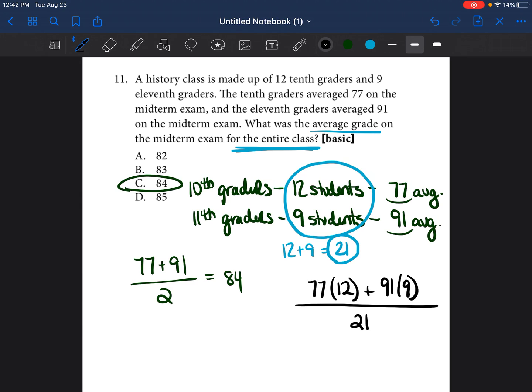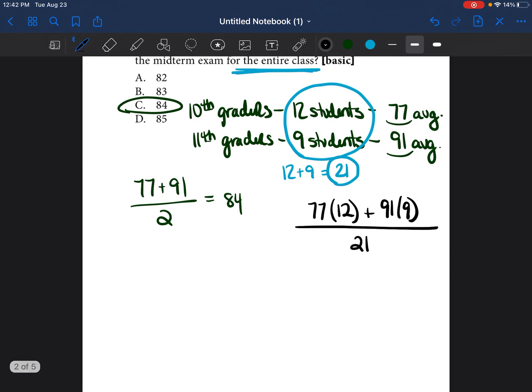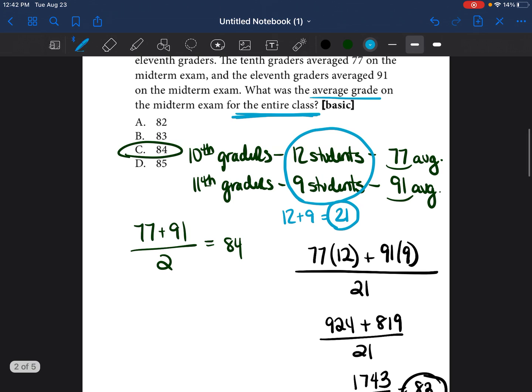Now, whatever answer this gives me is going to be my average that they're looking for. So let's just go ahead and quickly solve. 77 times 12 is 924. 91 times 9 is 819 divided by 21. 924 plus 819 is 1,743 divided by 21. When you divide those two, you get an average of 83. So the correct answer choice would be B, 83.